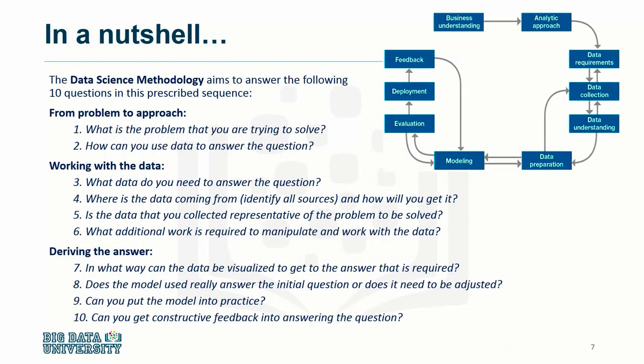In a nutshell, the data science methodology aims to answer 10 basic questions in a prescribed sequence. As you can see from this slide, there are two questions designed to define the issue and thus determine the approach to be used, then there are four questions that will help you get organized around the data you'll need, and finally there are four additional questions aimed at validating both the data and the approach that gets designed.